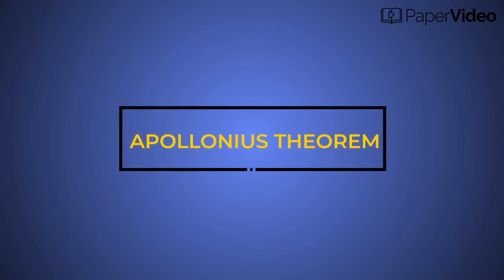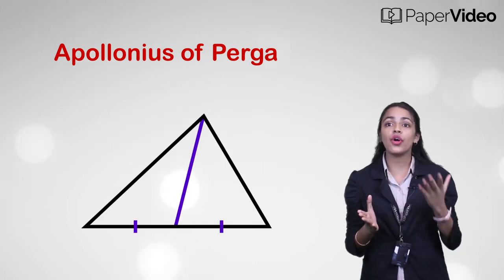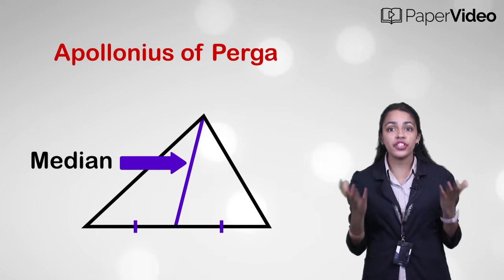Apollonius Theorem. What is Apollonius Theorem? This theorem is named after the mathematician Apollonius of Perga and establishes the relation between the length of sides and median of a triangle.